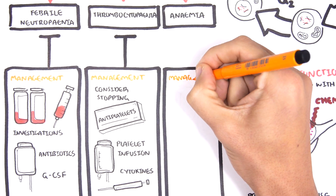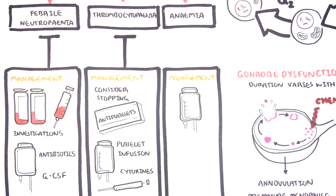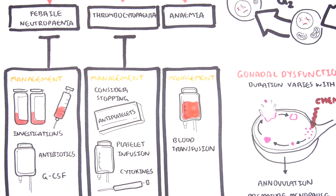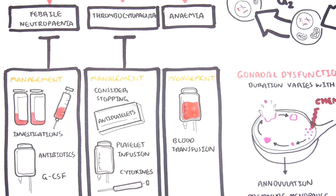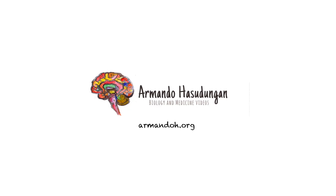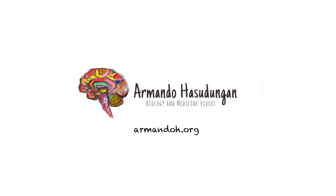For anemia, a blood transfusion is given to those who are symptomatic and usually have a hemoglobin below 80. Thank you for watching. The chronic side effects of chemotherapy drugs will be discussed elsewhere.